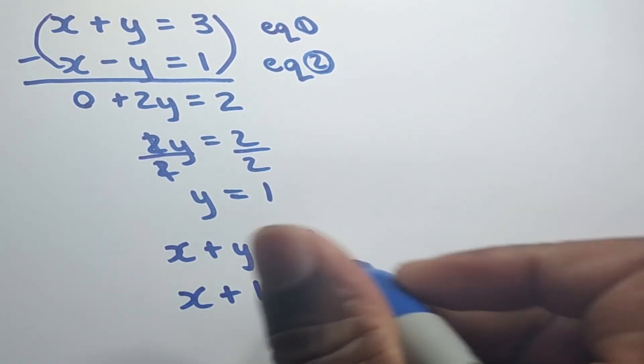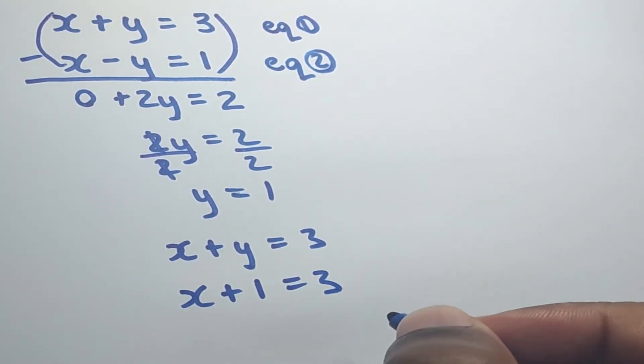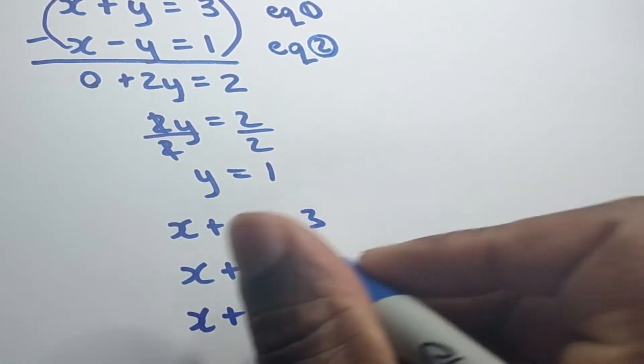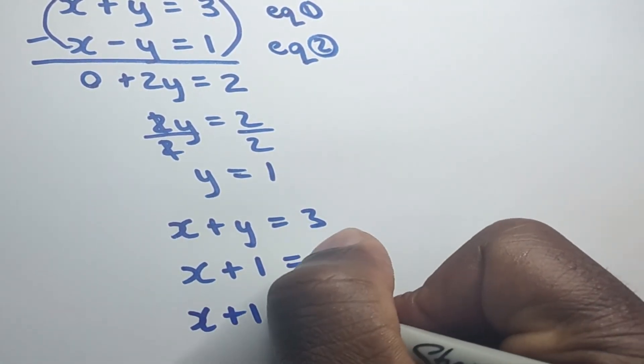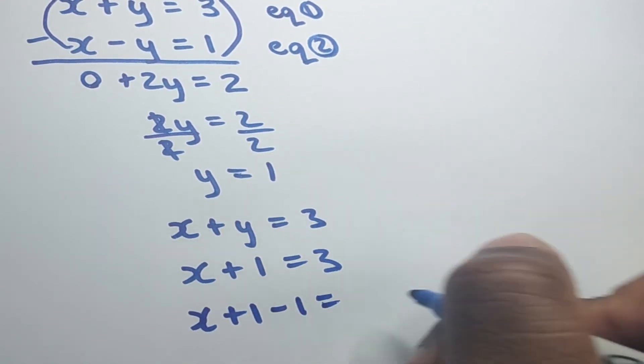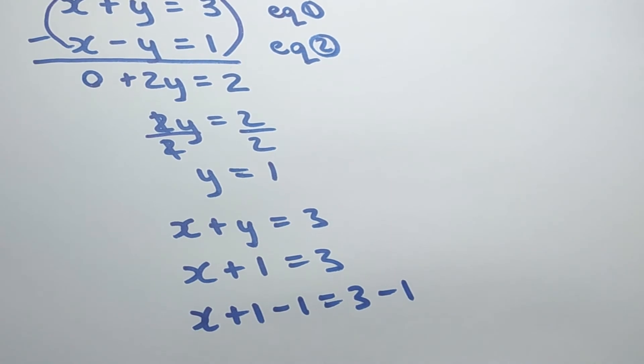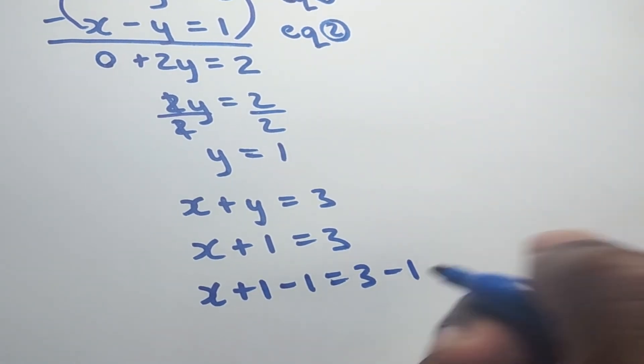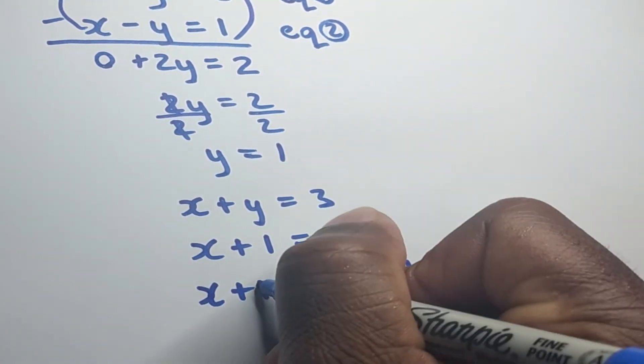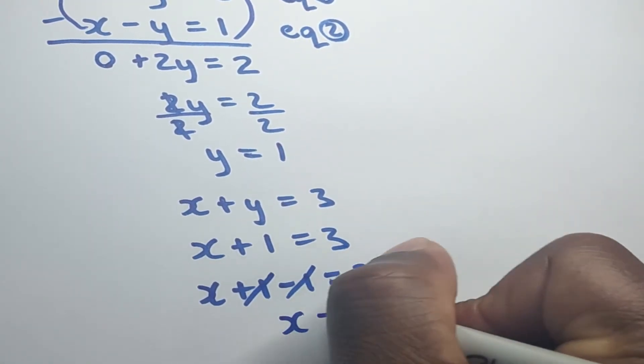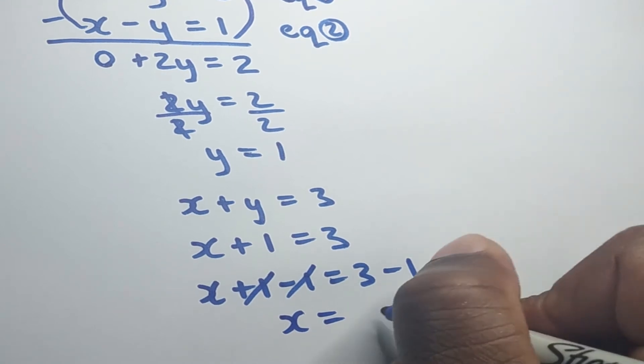And here we can simply transpose this for x. So we'll have x plus 1. And to get rid of this positive 1 from over here, we are required to minus 1. And if we minus 1 on one side, we are required to do the same thing to the other side to keep the equation balanced. So 1 minus 1, these two things pretty much cancel out. And we're left with x is equal to 3 minus 1, which is 2.